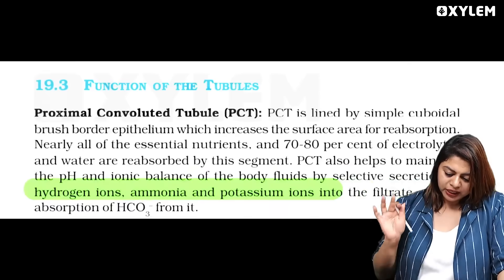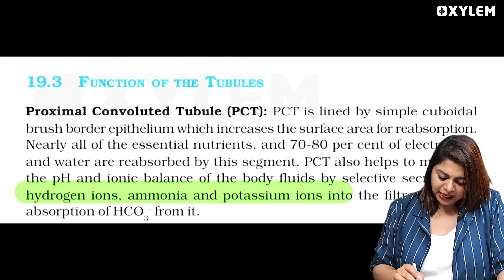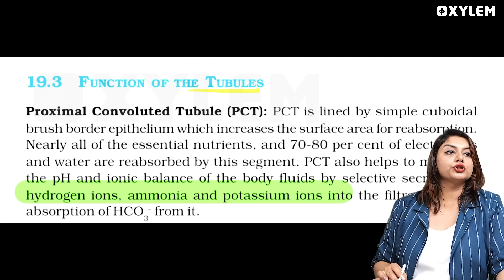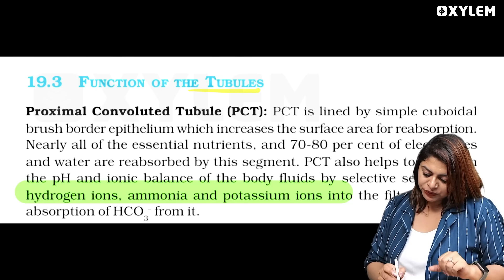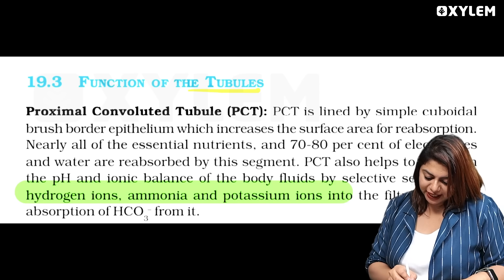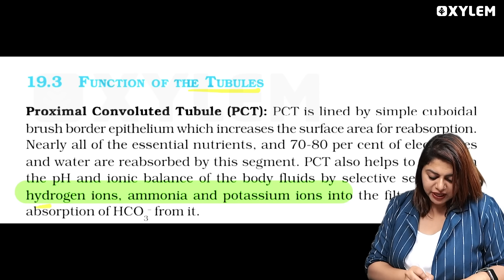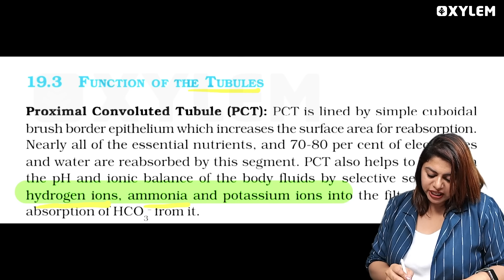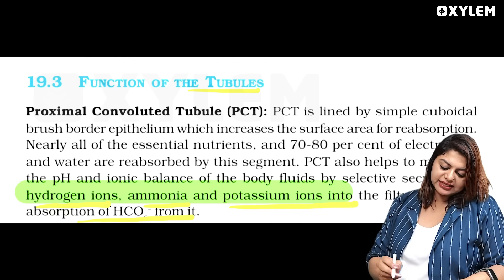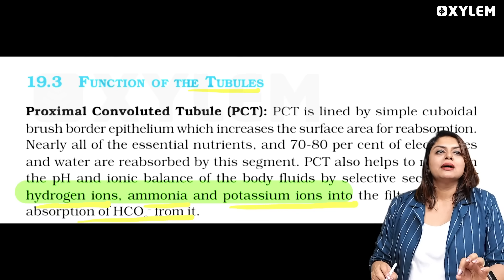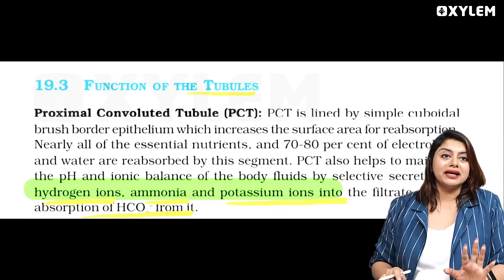Now, we are going to talk about excretory products in the chapter. The function of the tubules is proximal convoluted tubule. PCT also helps to maintain the pH and ionic balance of the body fluids by selective secretion of H plus ions, ammonia and potassium into the filtrate and by absorption of HCO3 from it.